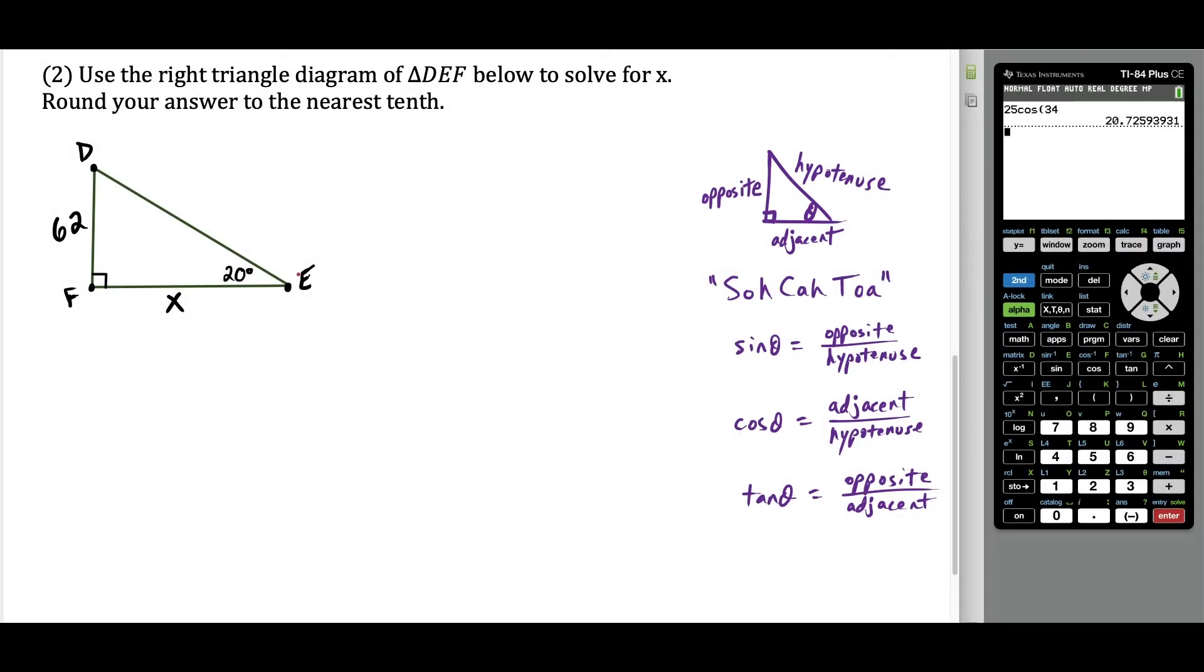So for the next question, we still want to solve for x, but this time we have triangle DEF, and the numbers are just a bit different. So what I think about right away here is that I'm given this 20 degree angle. So what I'm thinking about here is we have a 20 degree angle, we know one of the sides is 62 units long, we want to solve for x.